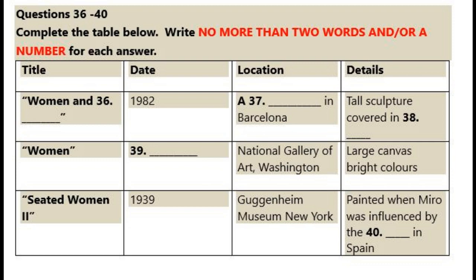As the lecture continues, answer questions 36 to 40. Let's start with this — one of Miro's best-known and brightest works, Woman and Bird.